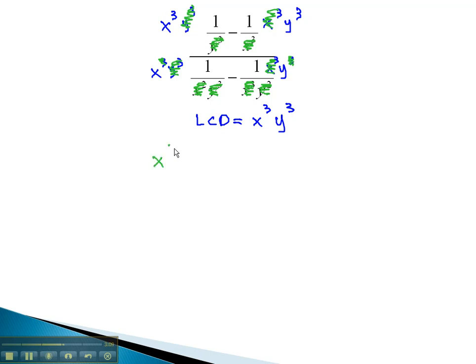We now have x cubed minus y cubed over x minus y. We now are ready to simplify, but before we can simplify, we must first factor the expression, and only divide out factors.